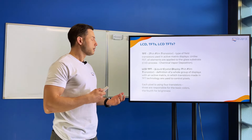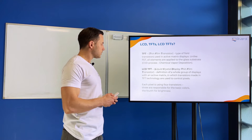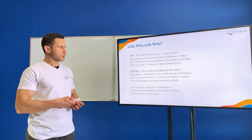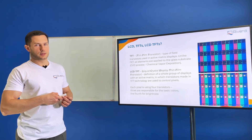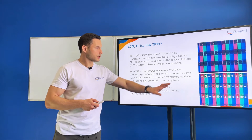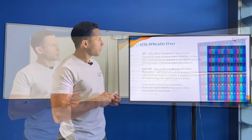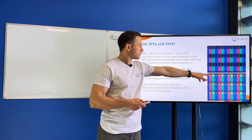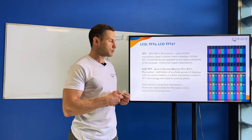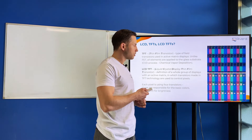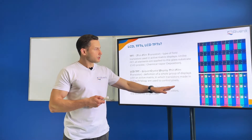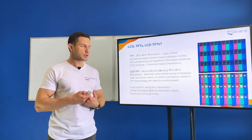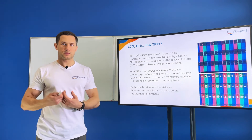We don't see the transistors because they are very small and hidden, but if we zoom into this display very close we will see something like this. Here in this image we see sub-pixels with the basic colors — RGB. The black part that is uncovered here contains the transistors and some electronic circuitry. In every sub-pixel we have transistors, and this is what makes the display active — this is what makes the TFT display.